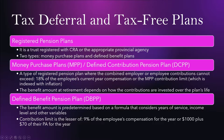With the defined benefit pension plan, the benefit amount is predetermined based on a formula that considers years of service, income level, and other variables. The contribution limit is the lesser of 9% of the employee's compensation for the year or $1,000 plus $70 of their pension adjustment for the year.